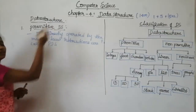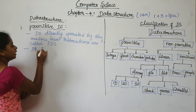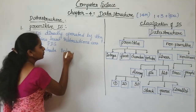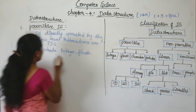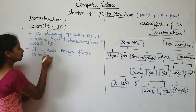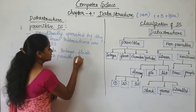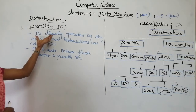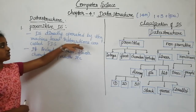This primitive data structure includes integers, floating point, characters, and pointers. This primitive data structure is directly operated by the machine level instruction.